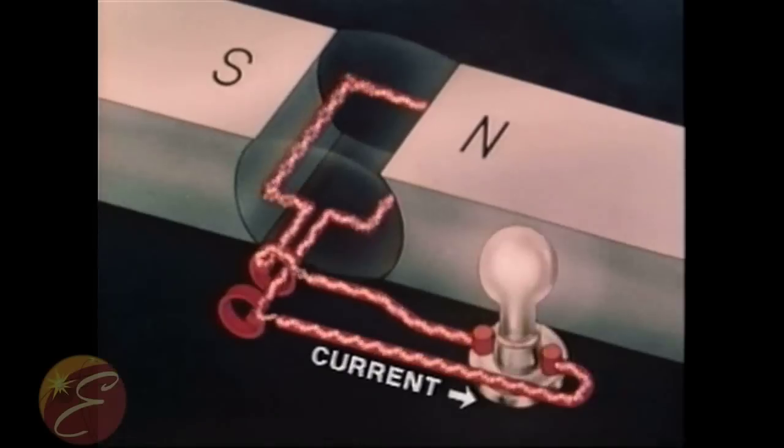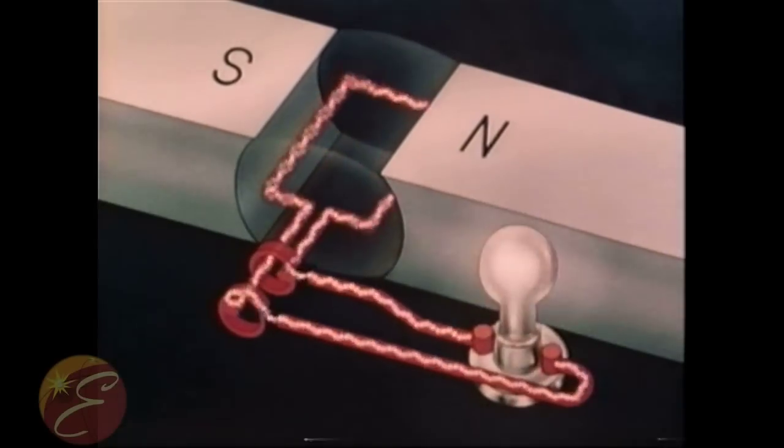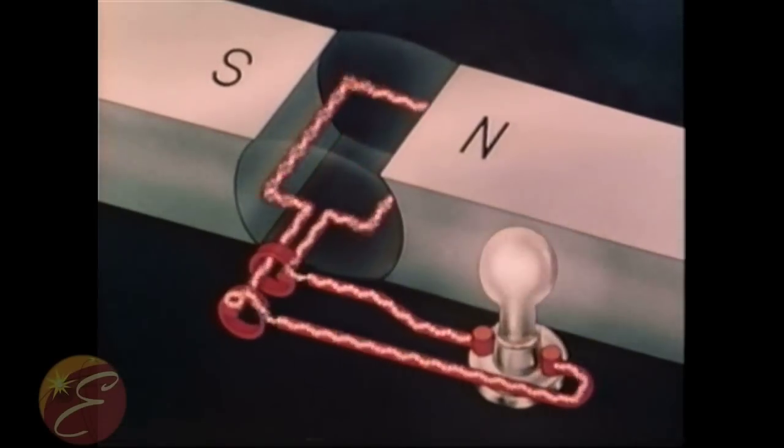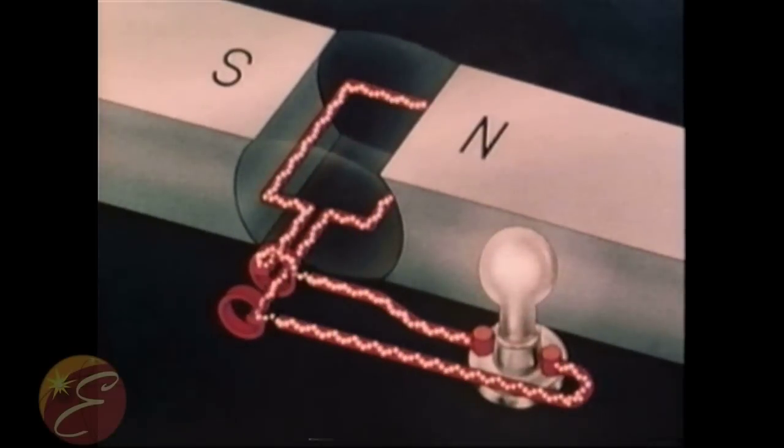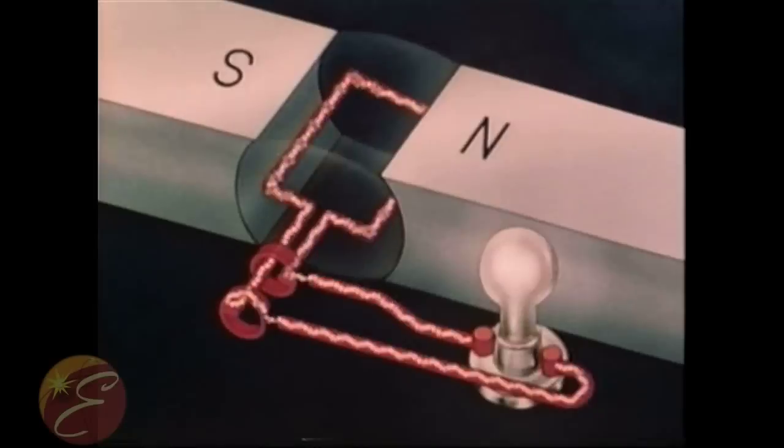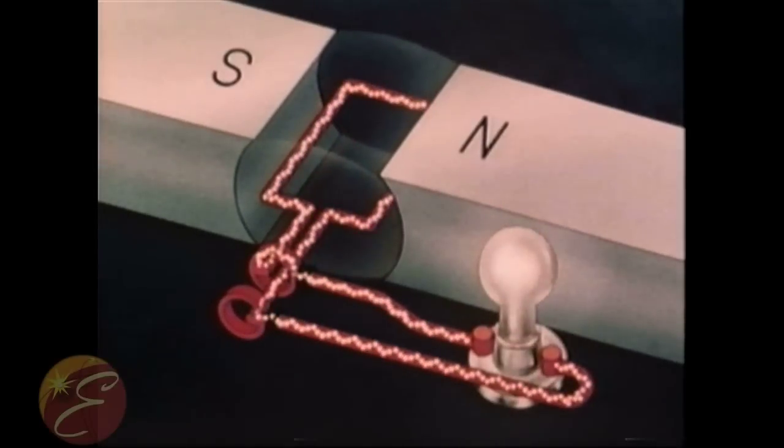By looking at this simple generator, we can see most current is produced when the conductor passes through magnetic lines of flux at the fastest rate. That is, the greatest current occurs when the conductor moves at right angles to the magnetic field.